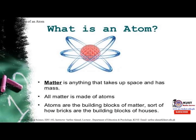Democritus' explanation of the atom begins with a stone. A stone cut in half gives two halves of the same stone. If the stone were to be continuously cut, there would exist a piece small enough that it could no longer be cut. The term atom comes from the Greek word for indivisible, which Democritus concluded must be the point at which any form of matter cannot be divided anymore.